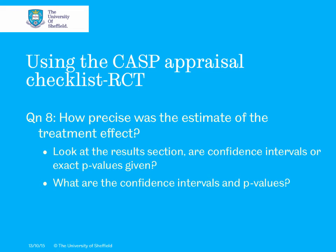When looking for the answer to question eight — how precise was the estimate of the treatment effect — look in the results section. Check whether the authors present p-values, not just whether p is less than 0.05, but whether they give exact p-values and whether they also provide confidence intervals. In answering question eight, you're looking at how the results are presented and how precisely the results are reported.